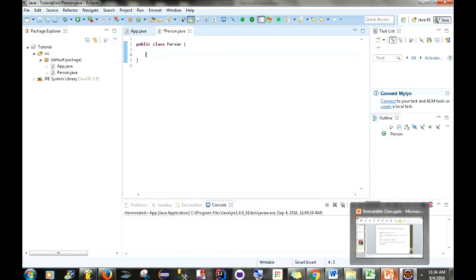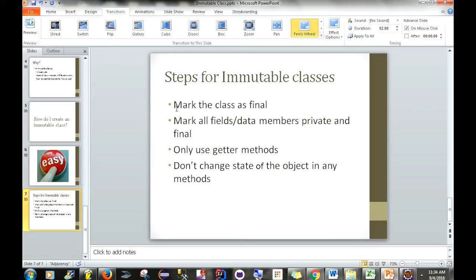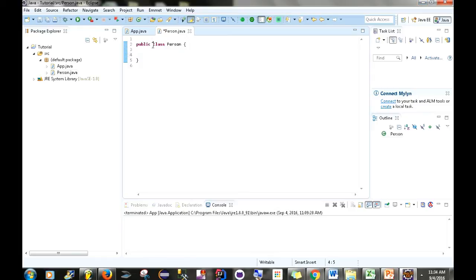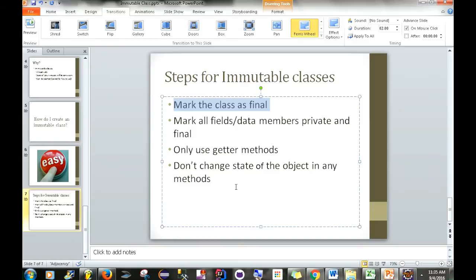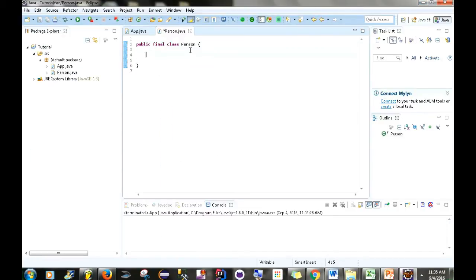And we want to make this class immutable. Now, if we look back at the slides, these are the steps that we need to take. We need to, first of all, mark the class as final. So, we're going to do that right now. Go here, final. Okay. This means that this class cannot be inherited from. All right. So, we want to go back here. And we want to also mark all fields or data members as private final. So, let's do that right now. So, I'm going to add some fields.